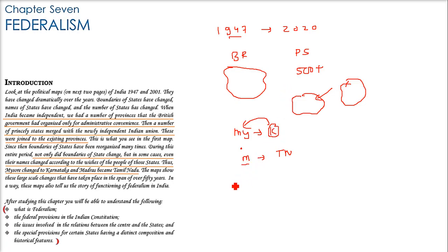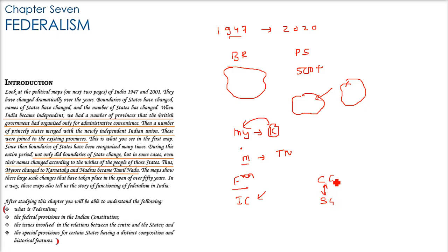What we are going to understand here is: first, what is federalism? What are the federal provisions in the Indian constitution? There are two relationships — one is the central government for the whole country and the state government for different provinces. What is the relationship between these two governments, and between state governments? And there are certain states given special provisions — what are these and why are they given?